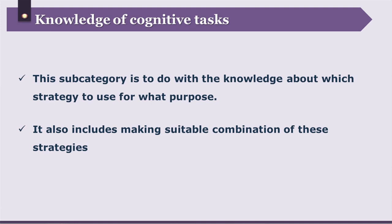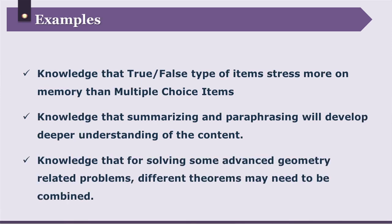The next category is knowledge about cognitive tasks — contextual and conditional knowledge. To understand this, consider a carpenter who has many types of nails, each with a specific use. When he has to mend something, he may use a certain nail or a combination of nails. In our context, the thing to mend is a situation or problem and the nails are different types of strategies one has learnt. This subcategory is about knowing which strategy to use for what purpose and making suitable combinations. Examples: knowing that true or false items stress memory more than multiple choice items; knowing that summarizing and paraphrasing develops deeper understanding; knowing that for advanced geometry problems, different theorems may need to be combined.